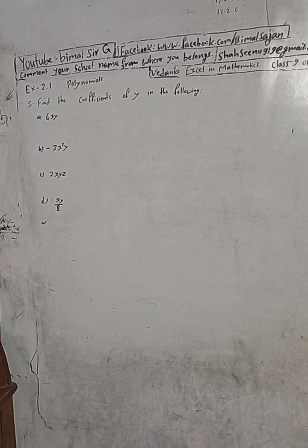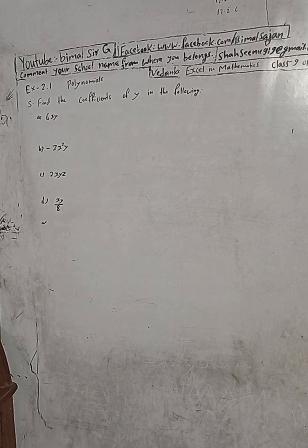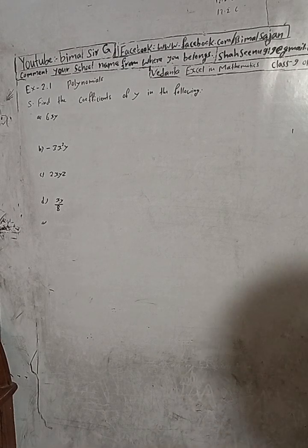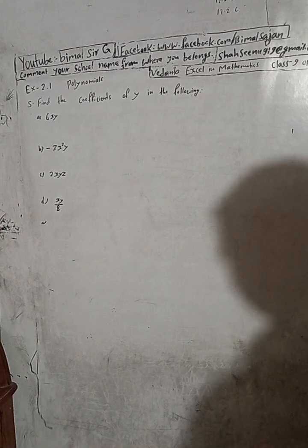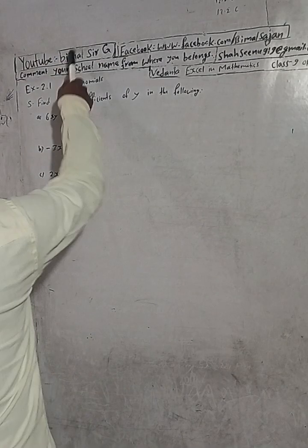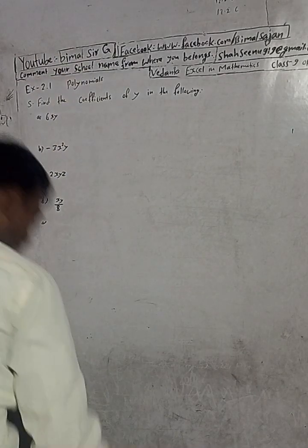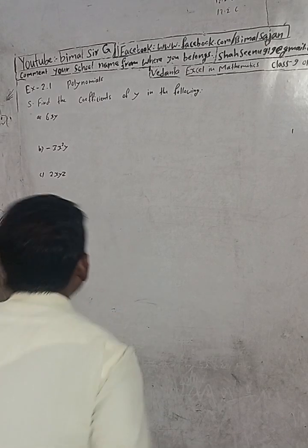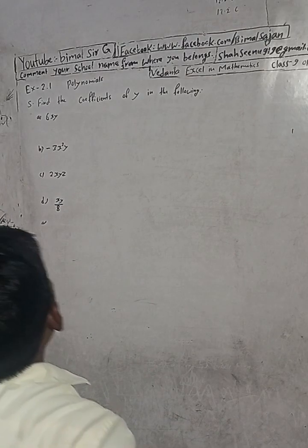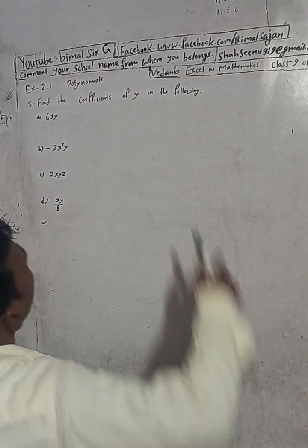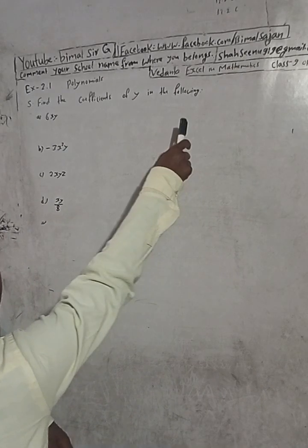This is Question number 5, Exercise 2.1 — Polynomials, from Vedant Excel in Optional Mathematics, Class 9 and 10. Don't forget to check the playlist. The question is: find the coefficients of y in the following expressions.